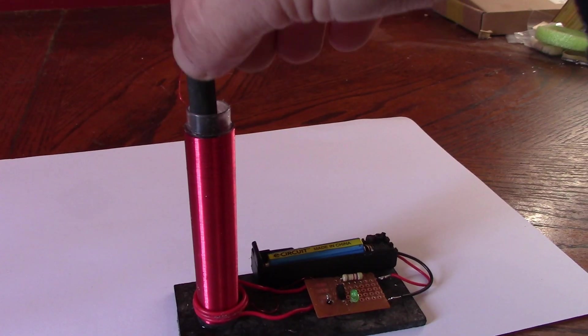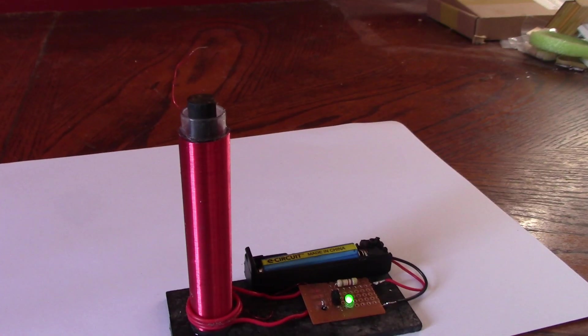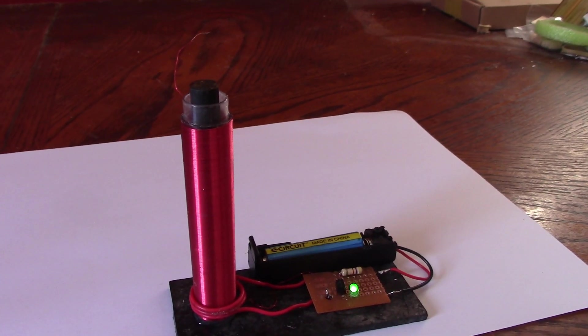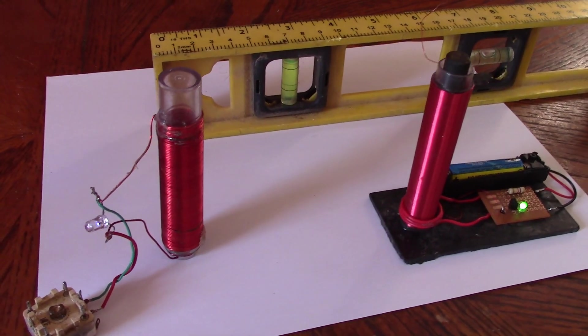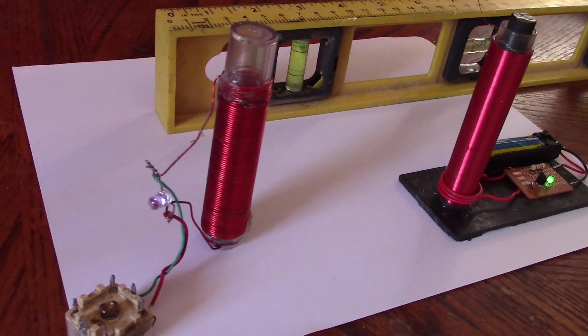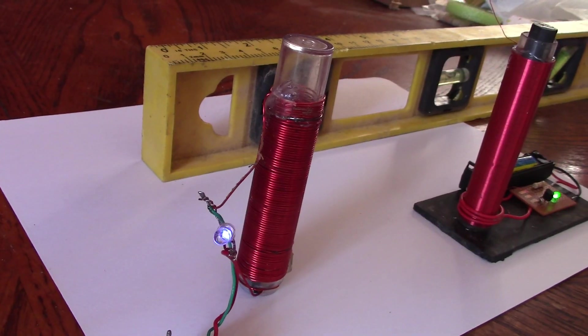As you can see it uses a ferrite rod in the middle. I got this one from an old AM radio but in a minute I'll tell you what to do if you don't have one. That rod is needed because of the diameter of the coil itself being just a solder tube. If it was wider it wouldn't need one, but that would use more wire and end up as a larger system.